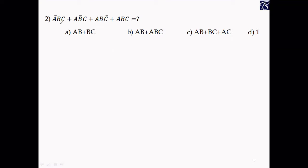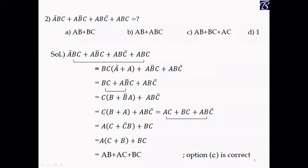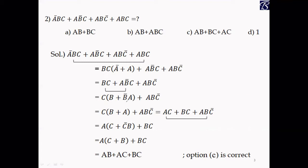Problem 2: An expression is given — Ā BC + AB̄ C + ABC̄ + ABC — we need to simplify this. Looking at the first and last terms, BC is the common factor, and A + Ā becomes 1. For the first two terms, C is common; inside the brackets, using the identity A + Ā B = A + B, the redundant variable B̄ is removed.